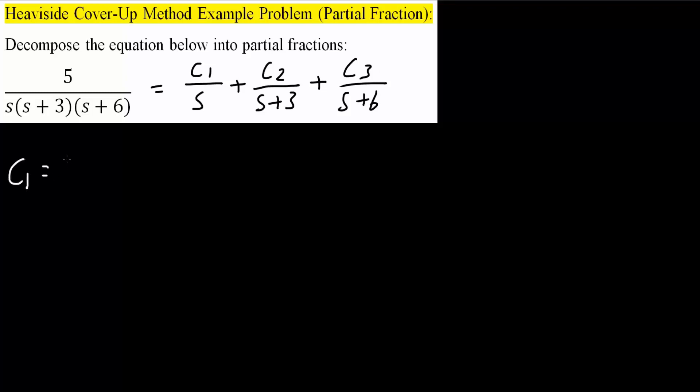The way we're going to do this is we keep the numerator, so we get five, divided by everything except for the one that c1 is on top of. So s plus three and s plus six.